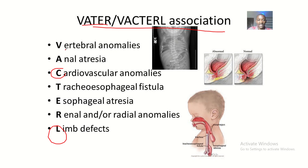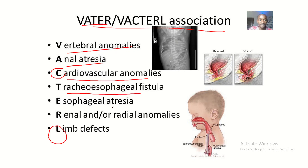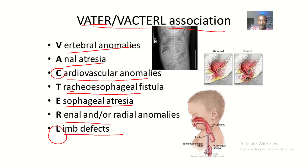Let's go over the VACTERL mnemonic again. V means vertebral anomalies, A means anal atresia, C means cardiovascular anomalies, T means tracheoesophageal fistula, E means esophageal atresia, R means renal anomalies, and L means limb defects. VATER is a smaller concept compared to VACTERL because VACTERL has the added C and L.